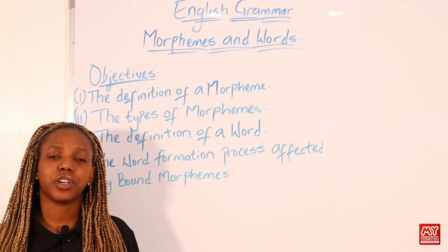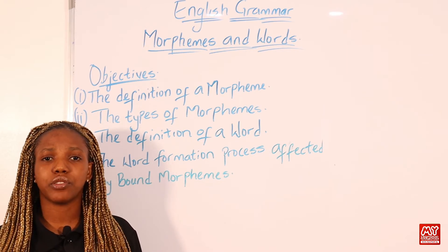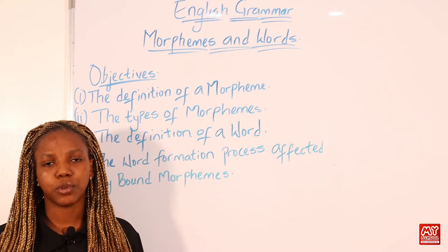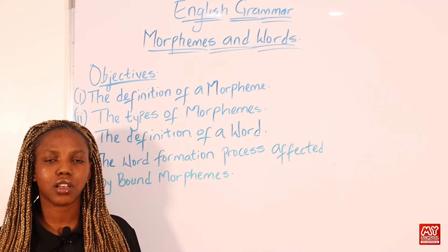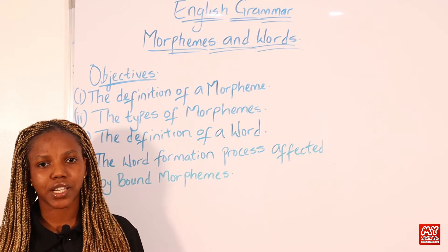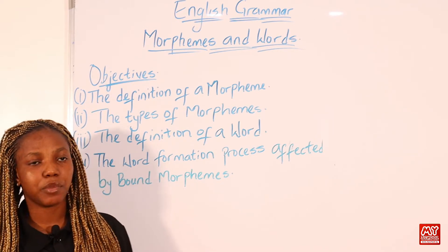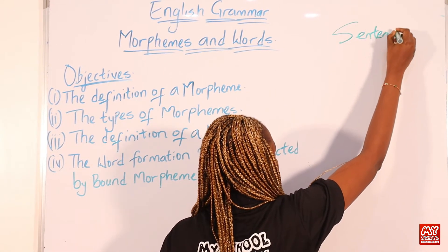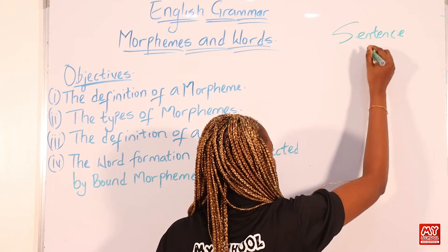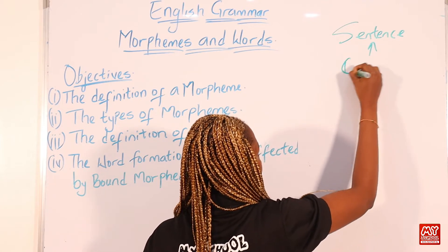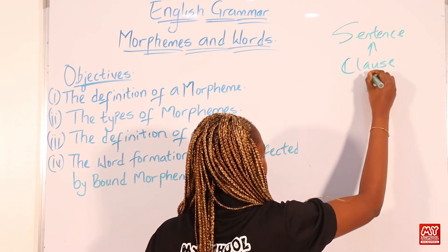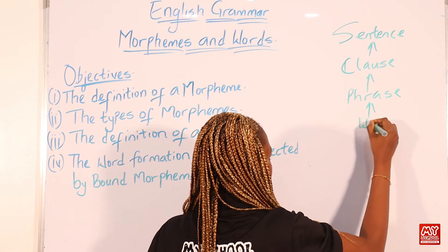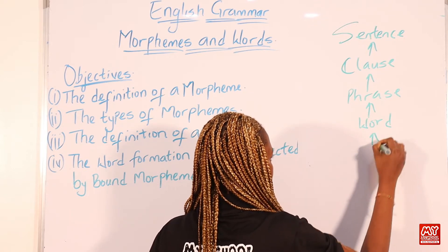Now let's begin with the first objective. But before we look at that, I want to quickly remind you of the grammatical hierarchy we discussed in the previous video, where we looked at sentence as the highest, followed by clause, phrase, word, and morpheme. Let me represent this on the board: sentence, clause, phrase, word, and morpheme.